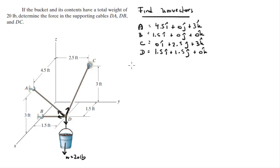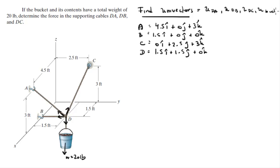So we need to find the unit vectors: unit vector DA, unit vector DB, unit vector DC, and the last unit vector is for the bucket. These are the four unit vectors that we need to find.